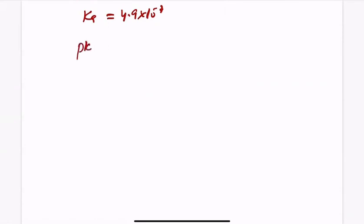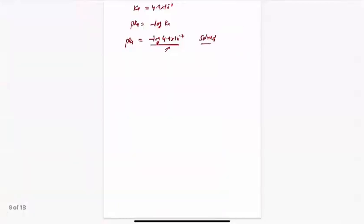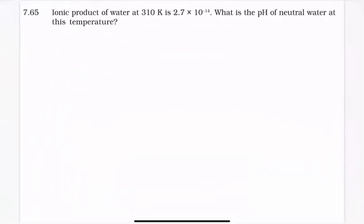Now pKa is also the negative logarithm of Ka. Just put in the Ka value 4.9 × 10⁻⁷ and take the log — you will get your answer. So that's it for problem 7.47. Now we have problem 7.65: the ionic product of water at 310 Kelvin is 2.7 × 10⁻¹⁴. What is the pH of neutral water at this temperature?